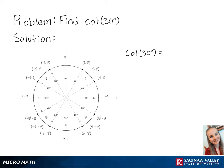For this problem, we're going to find cotangent of 30 degrees. Cotangent of 30 degrees is equal to cosine of 30 degrees over sine of 30 degrees.